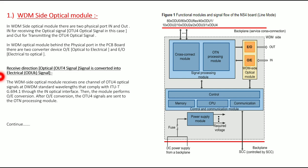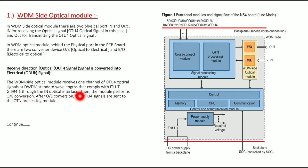Receive direction: The WDM side optical module receives one channel of OTU4 optical signal at a DWDM standard wavelength through the in-optical interface. Then this module performs optical to electrical conversion. After optical to electrical conversion, the OTU4 signals are sent to the OTN processing module for processing — including de-mapping — to get the exact client signal.